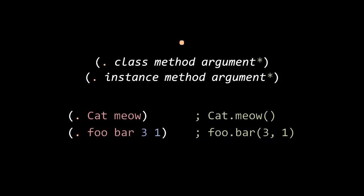To invoke an instance method, it's the same deal, except in place of specifying a class as a symbol, you simply just have some expression that evaluates into an instance object. So if I write dot foo bar three one, then assuming foo is not the name of some class, which is unlikely because it's not capitalized, then this is a call to the method bar of the instance foo with the arguments three and one.